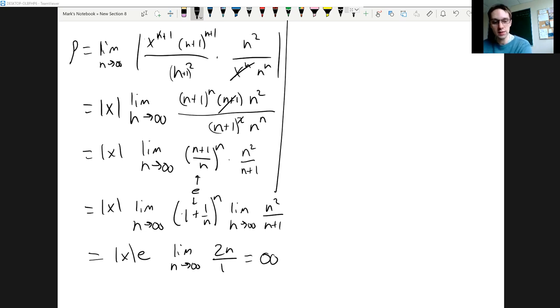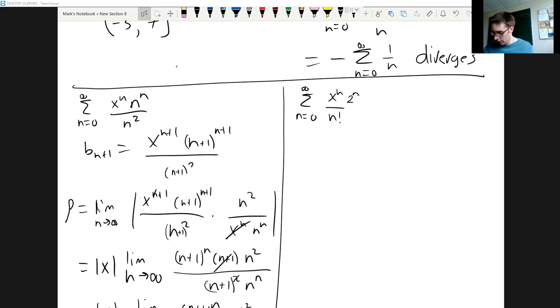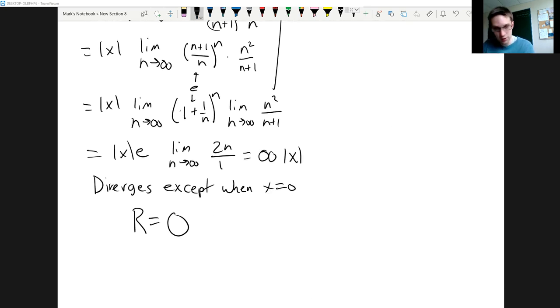So our ratio here is going to be infinity times e times absolute value of x. Well that's going to be infinite as long as x is not equal to 0. If x is equal to 0 on the other hand, then essentially we've just got 0 inside for each of our terms. So we'd say that this diverges except when x equals 0. The only way that we could get a ratio that is anything other than infinity is to have absolute value of x exactly equal to 0. And if you go back up to your original series you would again see that well yes, you're just adding up 0 over and over again. And so here the radius of convergence is 0, it only converges at the center point, it doesn't converge anywhere else.